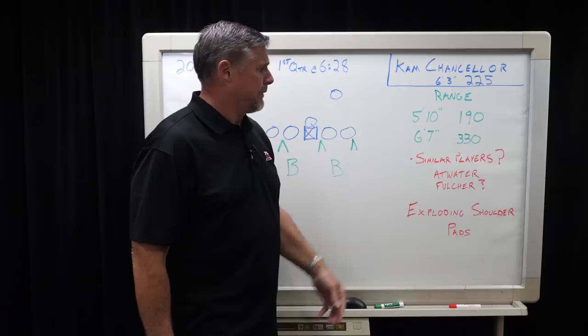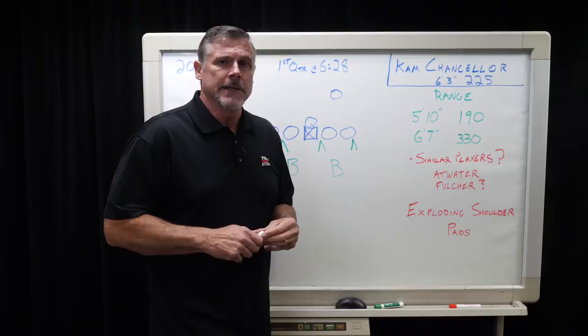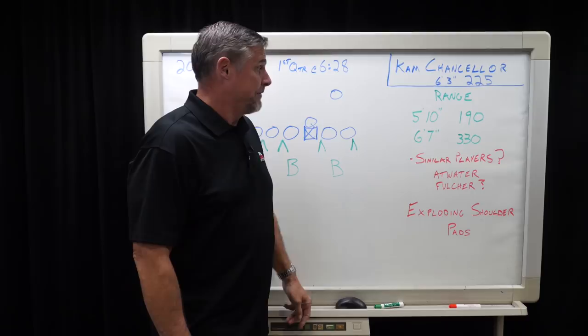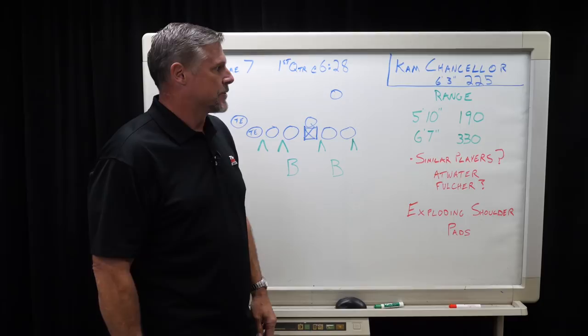David Fulcher played. He was an Arizona State strong safety that played for the Bengals, big dude that could come up and take on linemen, play the run. But did you ever see either of those guys fold a 6'7" guy in half? I have not seen that. And that's why I think he might be the guy that's in that range and the most versatile player.